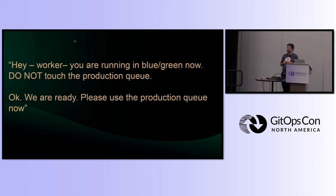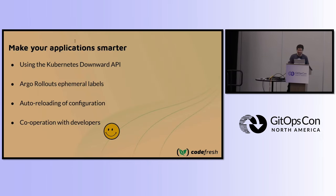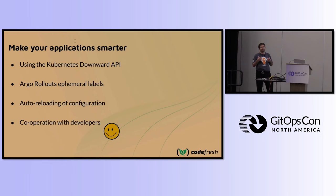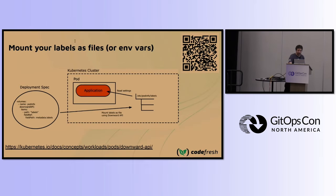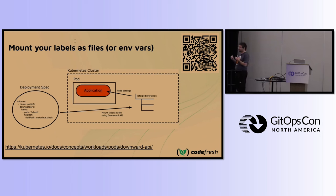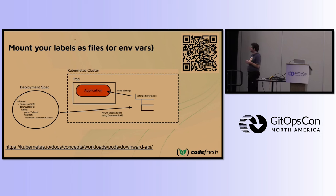We don't have an AI tool for that yet, so we emulate it with manifests. The tools we'll use today are: the Kubernetes Downward API, Argo Rollouts ephemeral labels, auto-reloading configuration, and working with developers to convert this English-language intent into something Kubernetes understands. The Downward API is part of Kubernetes — it's been there for a long time and is completely unrelated to Argo Rollouts. It allows you to put labels on a deployment and convert them to files or environment variables in an application.